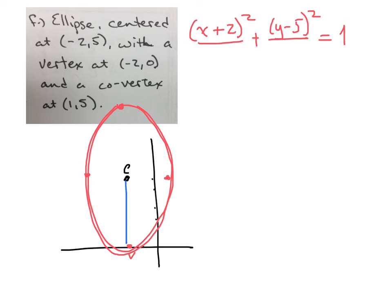Now, the thing about it is this distance from the center down to this first vertex is 5 units away. That's in the y direction, so it's going to go underneath the y coordinate, or the y fraction. And it isn't going to be 5, it's going to be 5 squared. So our denominator here is going to be 25.